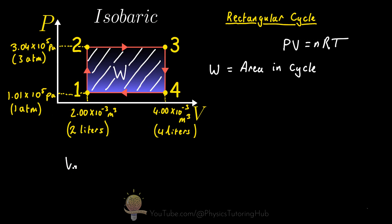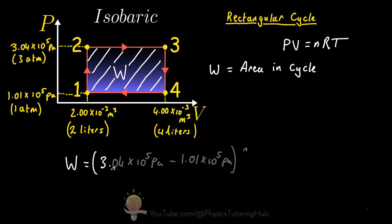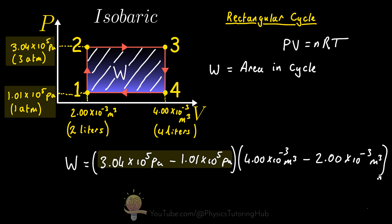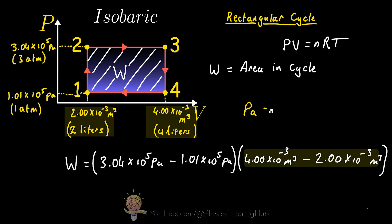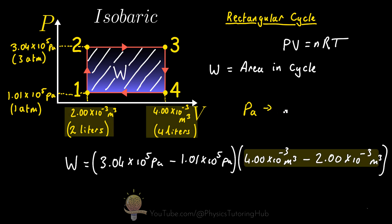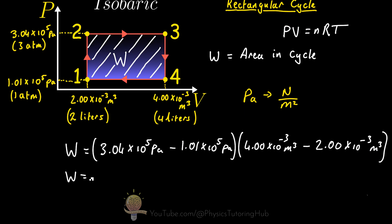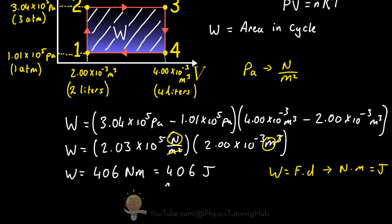Let's calculate the work done for our rectangular cycle by simply calculating the area of the rectangle. We take the difference in pressure between the highest and lowest pressure, and multiply by the difference in volume. The work done for the cycle comes out to 406 joules.